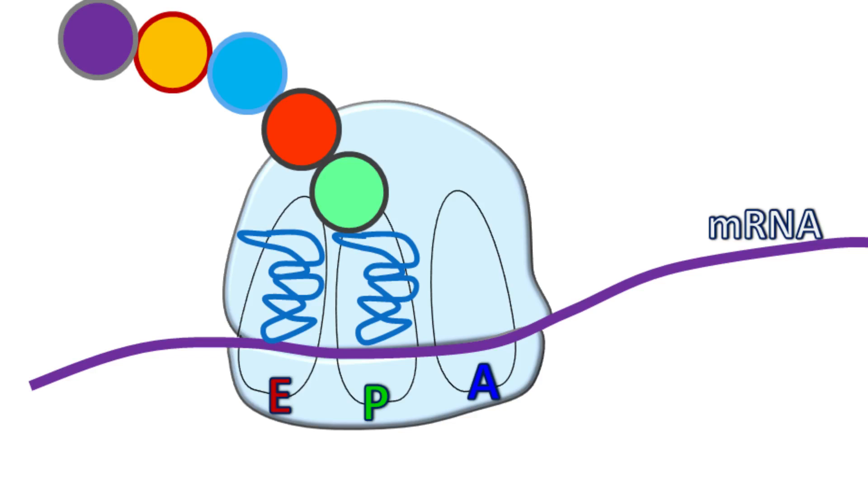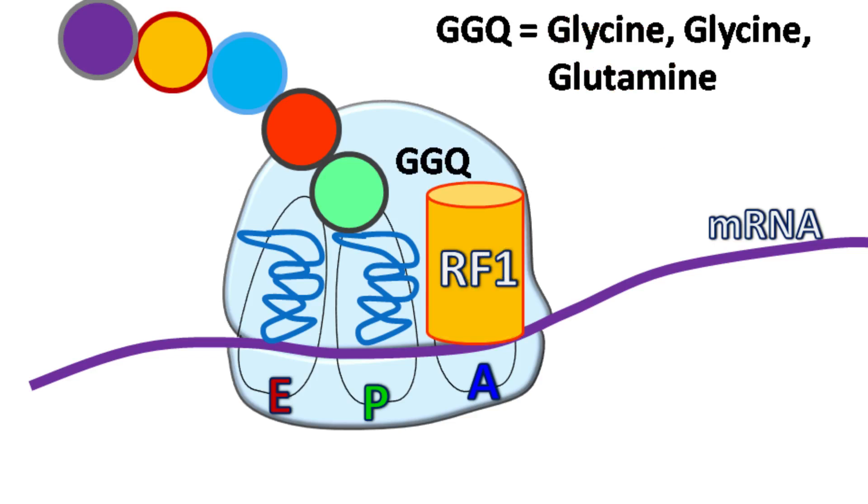When stop codons reaches the A site, the termination factor RF1 occupies the A site. The three amino acid glycine-glycine-glutamine present in RF1 helps in the release of polypeptide chain from the ribosome.